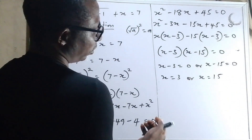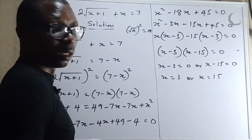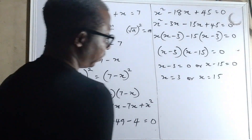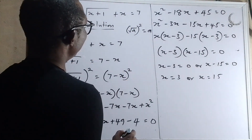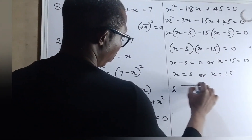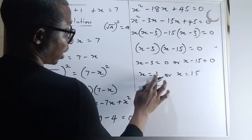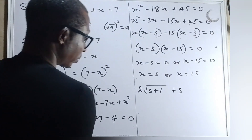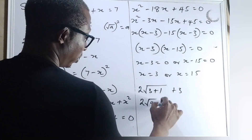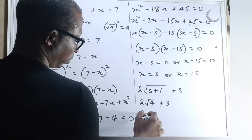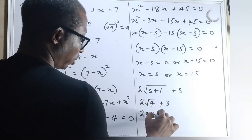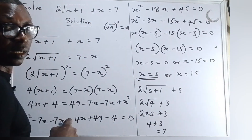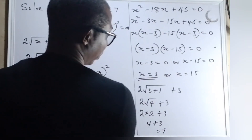Now we need to check to confirm if the two answers are roots of this equation. Let's substitute x equals 3: we have 2 square root of 3 plus 1 plus 3, that is 2 square root of 4 plus 3, which is 2 times 2 plus 3, giving 4 plus 3 equals 7. So x equals to 3 is a solution.